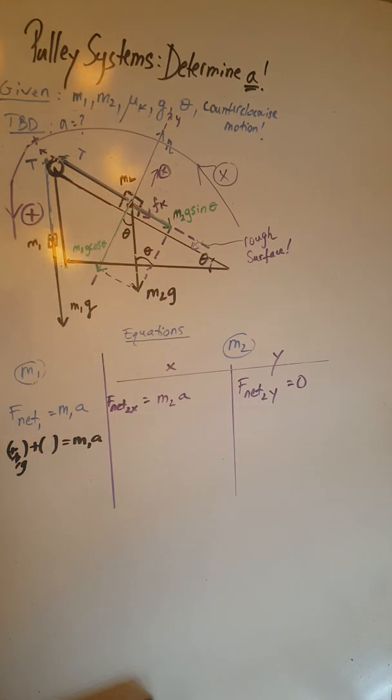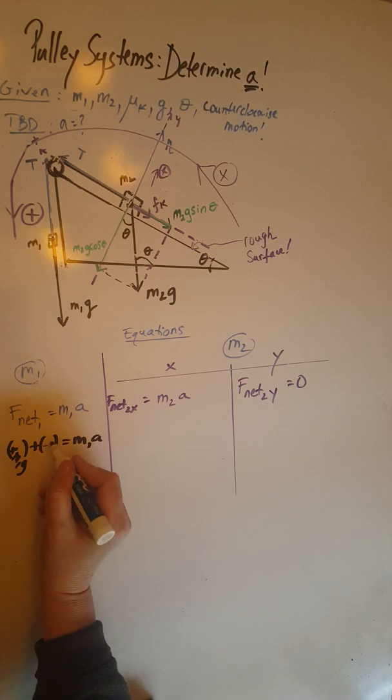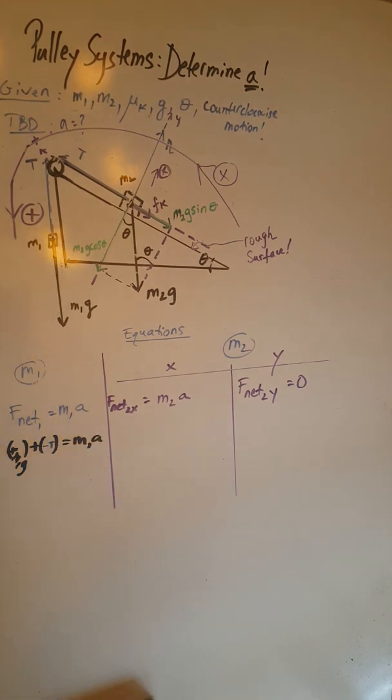One of them is positive m1g and the other one is negative T. When I simplify this equation, I end up with m1g minus T equals m1a.